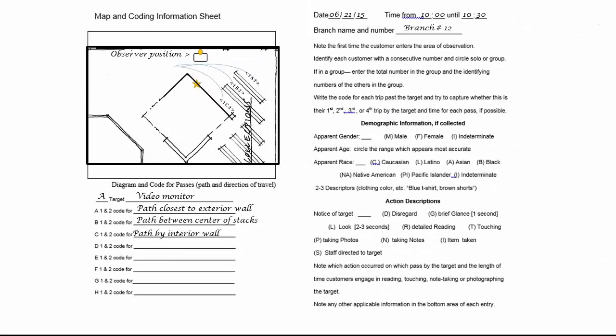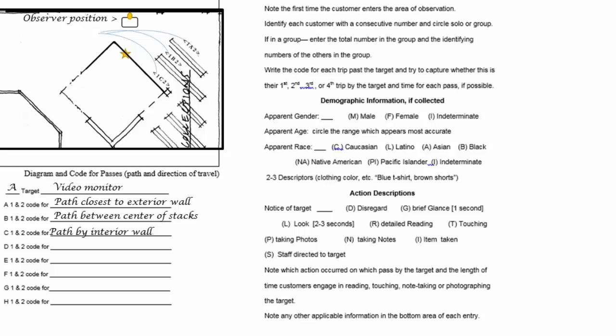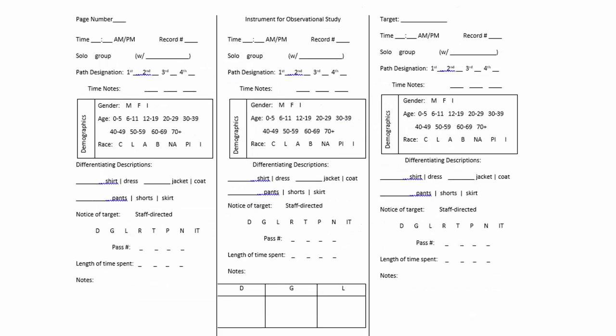The codes should be simple and clear, and all observers should be consistent. On the map and coding sheet, there are also notes about the information you will record on the instrument for observational study. Each observer should be familiar with all the information and have a copy of this available for quick reference during the observation. Each instrument page can be numbered to show its place in the larger project, or can be simply numbered sequentially by each observer. The project manager should determine which is more appropriate for each project.